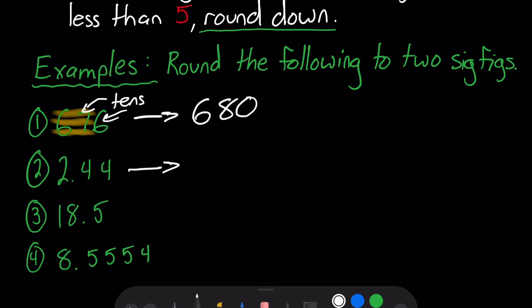We have 2.44. So again, we must round to two sig figs. So we know we will be rounding this four off right here. So since that four is less than five, we know we will round down. So this will now turn into 2.4.